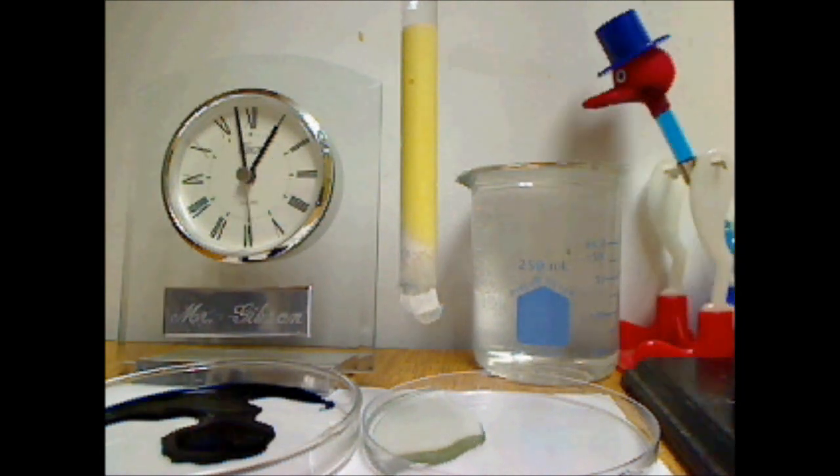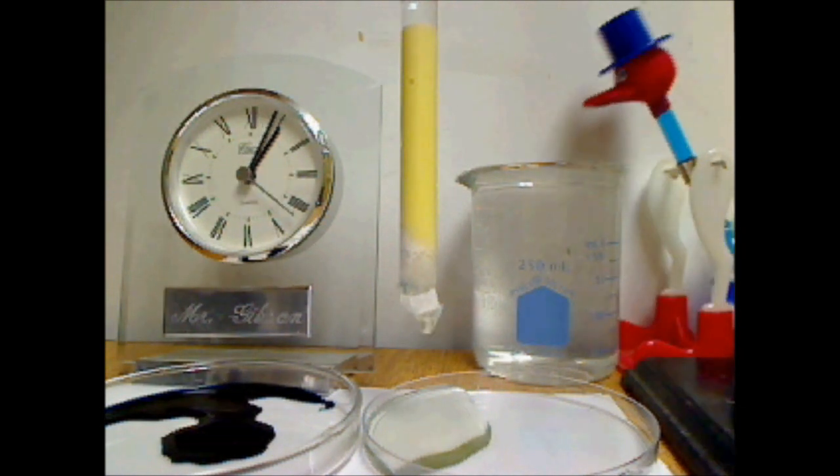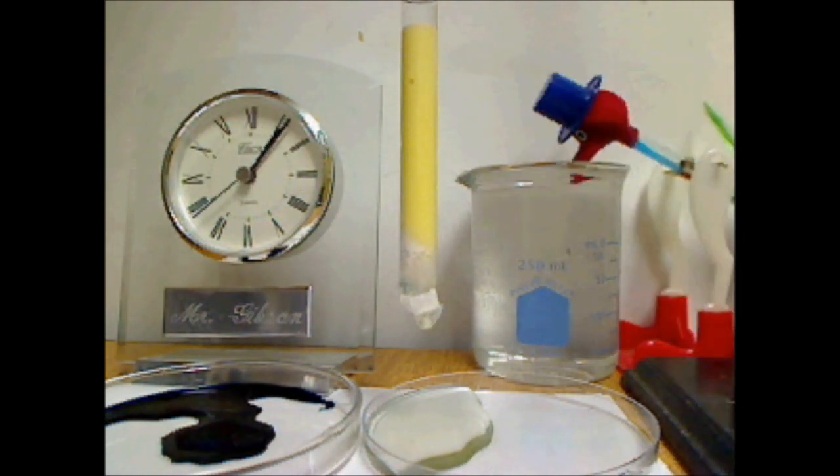So what you can do with column chromatography is change the mobile phase, and then it will hopefully flush it out. So I'm now going to change the mobile phase to acetone.